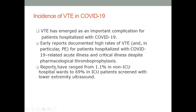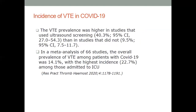Reports of VTE incidence have ranged from as low as 1.1 percent to close to 70 percent. This greatly depends on the population being studied, modalities of diagnosis such as active screening for lower extremity DVT, and the definition of thrombosis itself — whether we're talking about clinically relevant thrombosis or incidentally found device thrombosis. VTE prevalence was higher in studies using active screening, up to 40 percent.